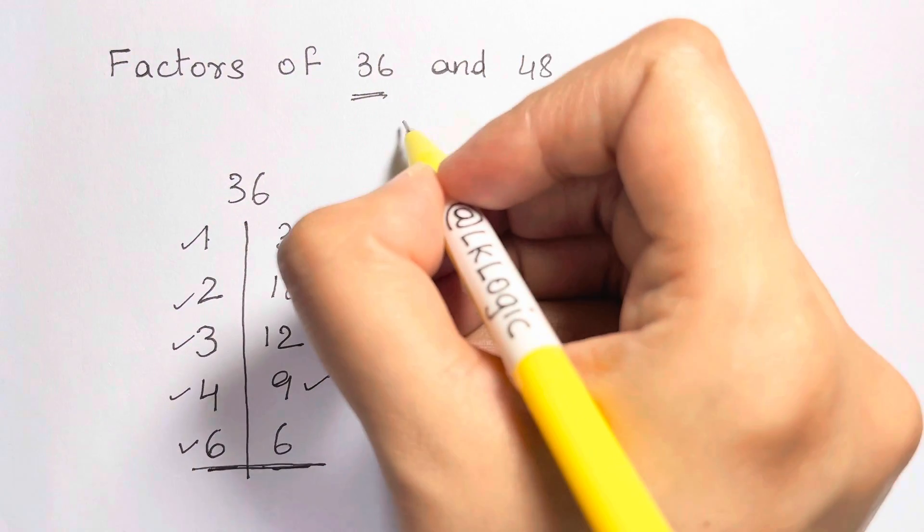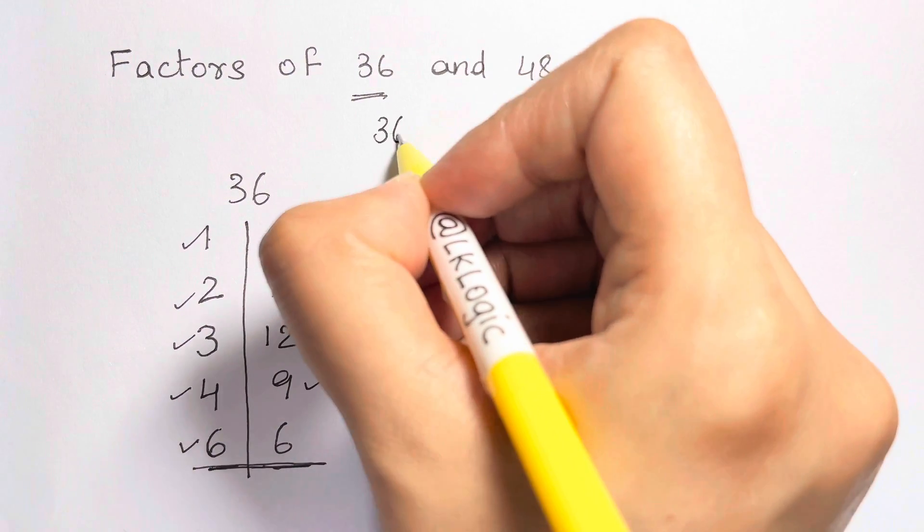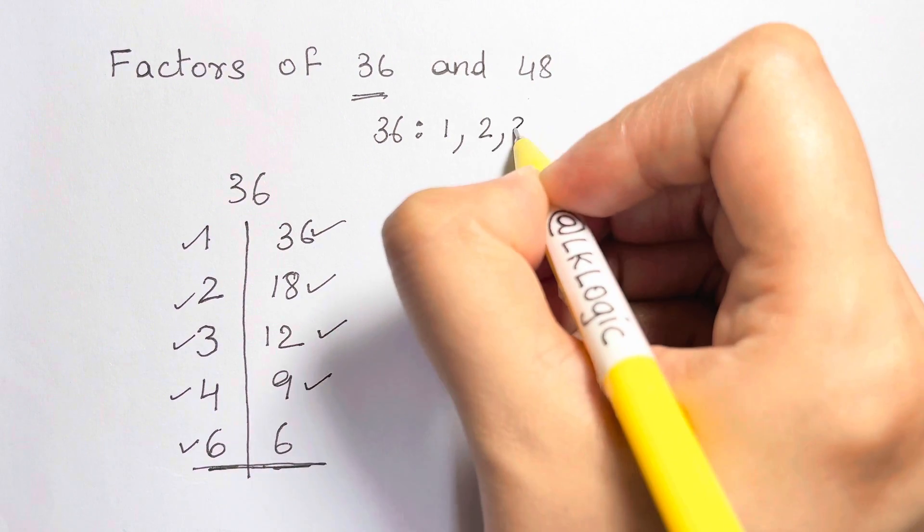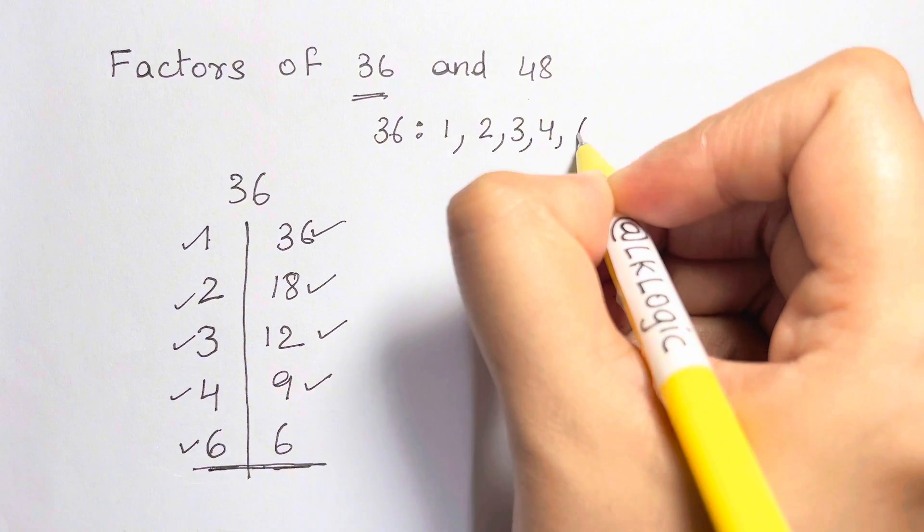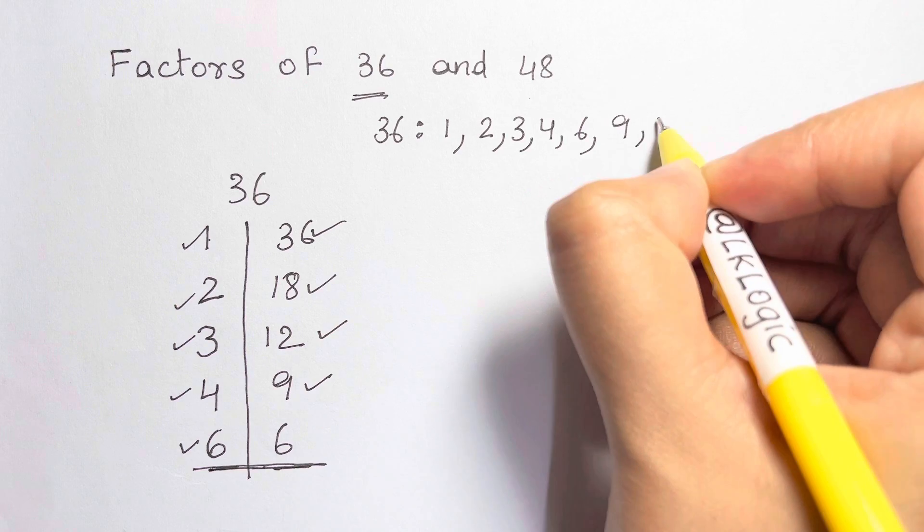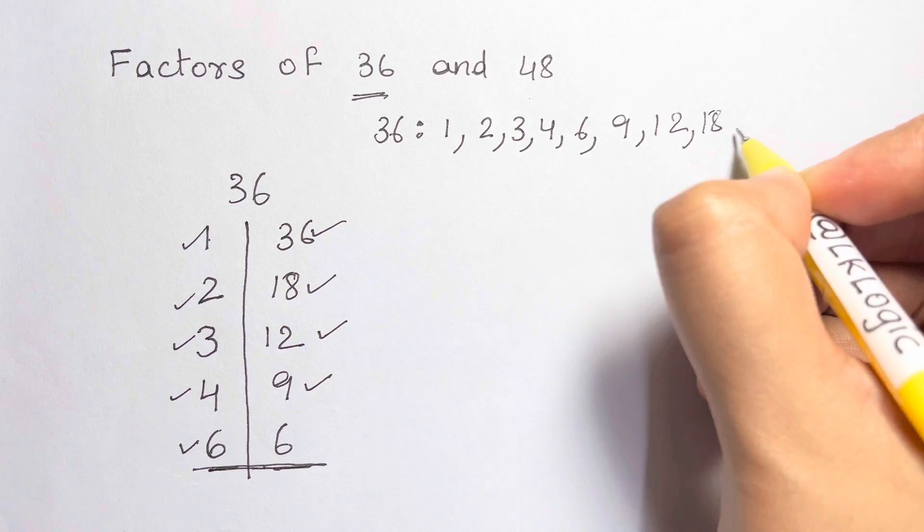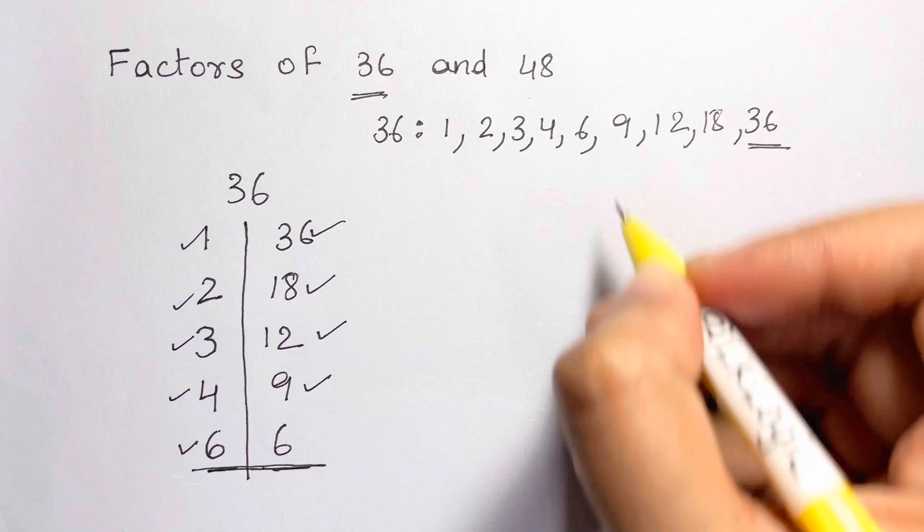So, we've got the factors of 36 as 1, 2, 3, 4, 6, 9, 12, 18, and 36. Okay.